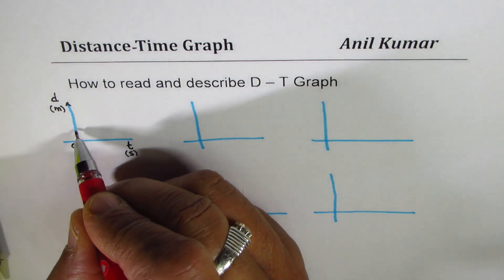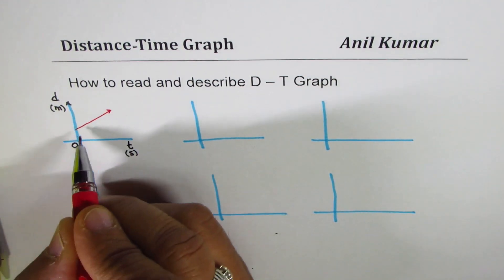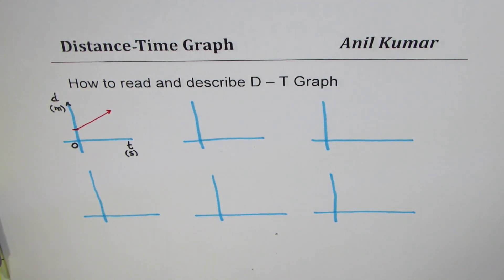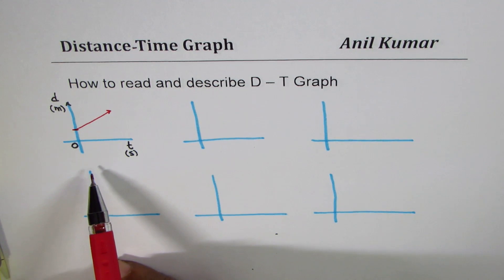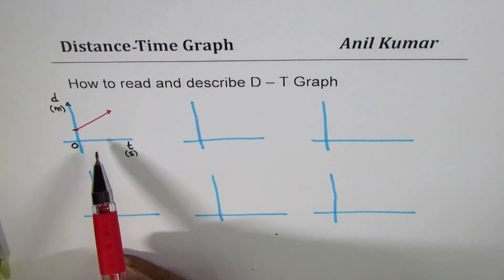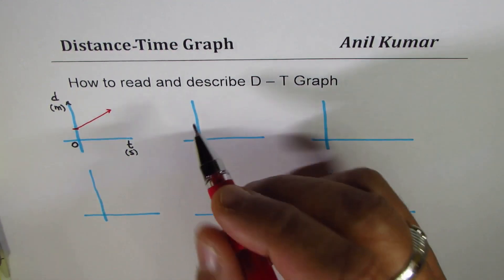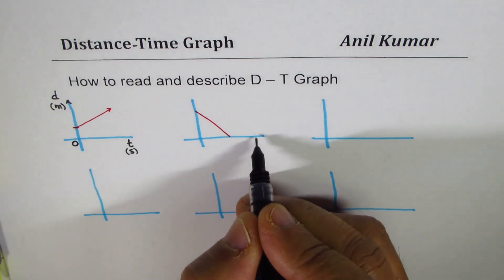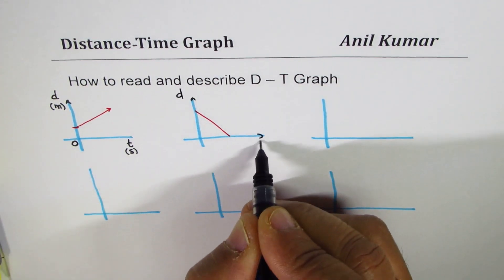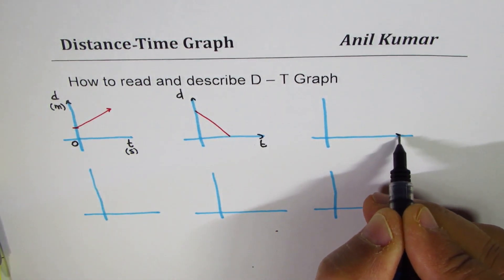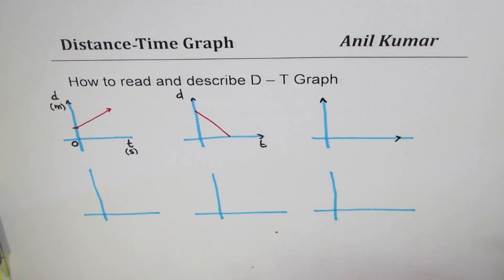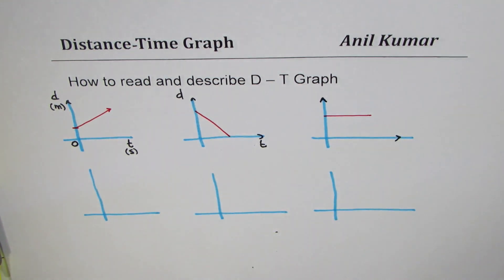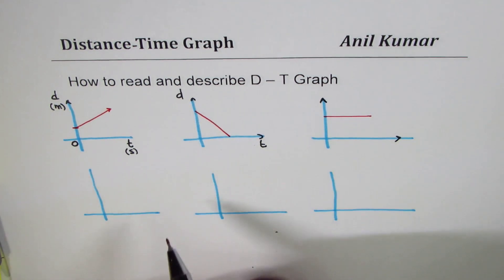So let's say we have a straight line moving like this from a point slightly away from the origin. Now, how do we read this kind of graph? We could have a rising line, we could have a line which falls — a straight line. There could be different units for distance and time. We could even have a horizontal line. So this is when we have straight lines — maybe rising, falling, or horizontal.